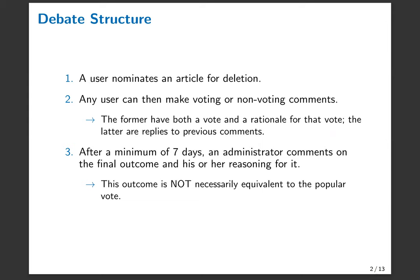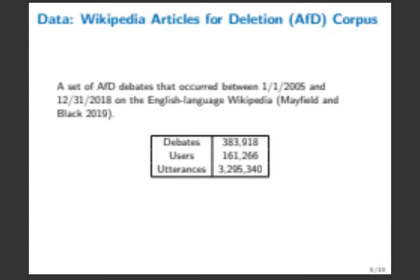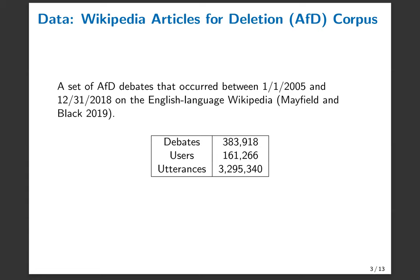And also there's a conclusion to the debate determined by an administrator. This allows me to utilize structural features related to voting sequences, as well as linguistic features that come out of the text of the rationales. The specific subset of articles for deletion that I'm working with are the debates that occurred between January 2005 and December 2018 on the English language Wikipedia. This roughly amounts to just under 400,000 debates and over 3 million comments, which include voting comments and non-voting comments. There are enough voting comments where it's a very rich data set.